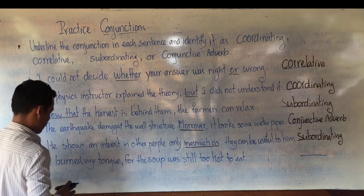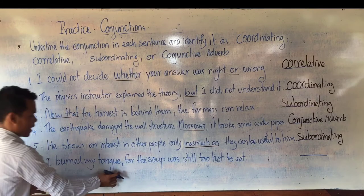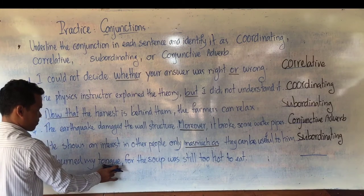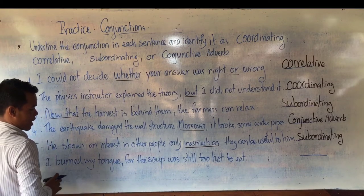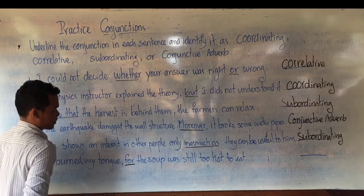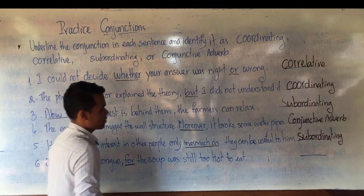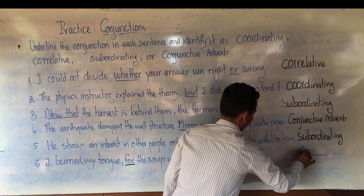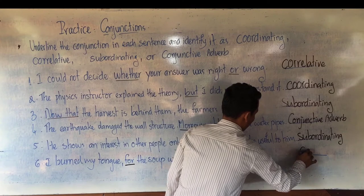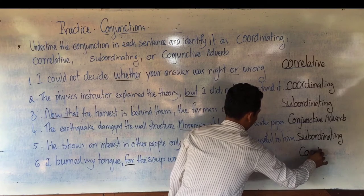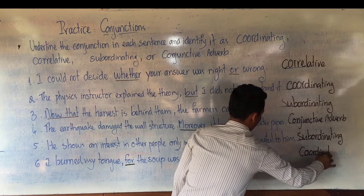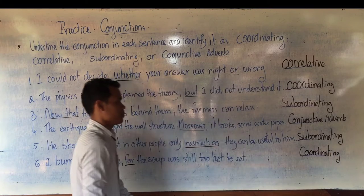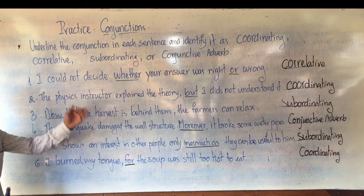The last one: 'I burned my tongue, for the soup was still too hot to eat.' Two independent clauses linked by a conjunction with a comma before it. 'For' is from FANBOYS — 'F' for 'for' — so it is a coordinating conjunction.